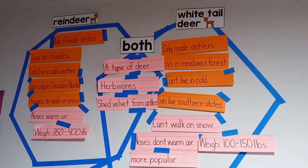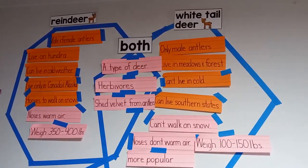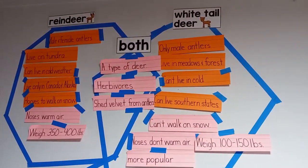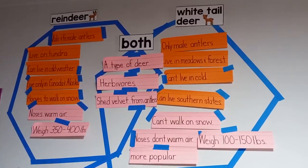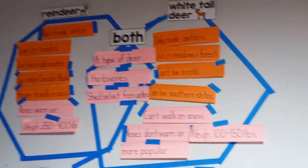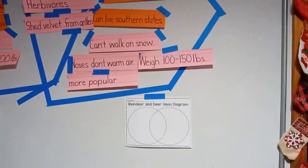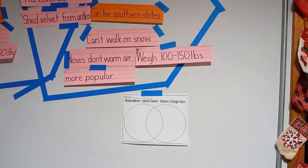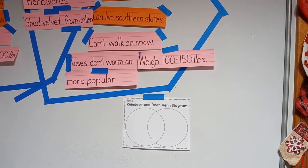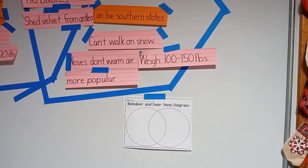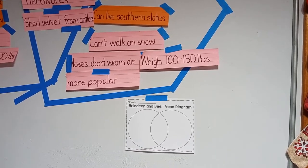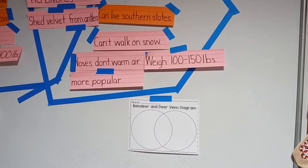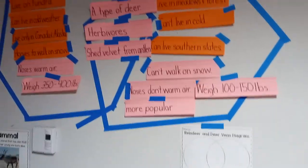We have been talking about reindeer and whitetail deer and how they are similar and different. This is our Venn diagram that we have done that goes with this worksheet right here. You write the reindeer on the left side and the whitetail deer on the right side, and what both of them have in common in the middle.